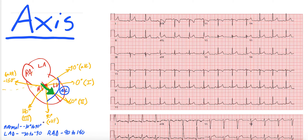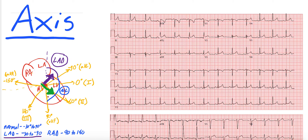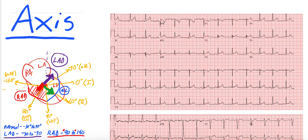So left-axis deviation is negative 30 degrees to negative 90 degrees — negative 90 degrees would be straight up north. So this area here is left-axis deviation. If the vector of depolarization falls this way, it's going to be LAD. Then right-axis deviation — we can use red — is positive 90 degrees to positive 180 degrees. So right-axis deviation is if the vector of depolarization is going in this general direction toward the right.